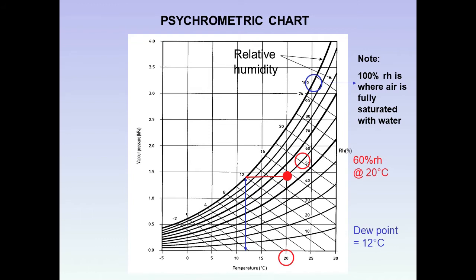That is, it is saturated at a dew point temperature of 12 degrees. Extending the line across to the left to the vapor pressure scale tells us that the vapor pressure is 1.4 kilopascals.